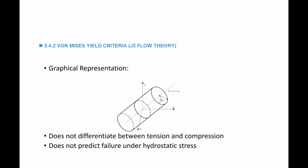For a general state of stress described by sigma 1, sigma 2, and sigma 3, the yield surface is represented by a cylinder surrounding the line sigma 1 equals sigma 2 equals sigma 3. Any point on the surface means the material is about to fail; any point inside means it's in the safe zone. Two important notes: this yield criterion does not differentiate between tension and compression, and it also does not predict failure under hydrostatic stress. If sigma 1 equals sigma 2 equals sigma 3 with no shear stresses and I substitute into the von Mises equation, I get zero — so similar to Tresca, it does not predict failure under hydrostatic stress.